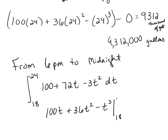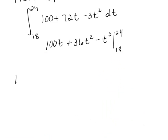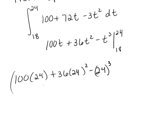But now it's going to be from 18 to 24, so that means you're going to need to plug in the 24 and then subtract it evaluated at 18. So 100(24) + 36(24)² - 24³, and then you'll subtract that with it all put in at 18, 100(18) + 36(18)² - 18³.